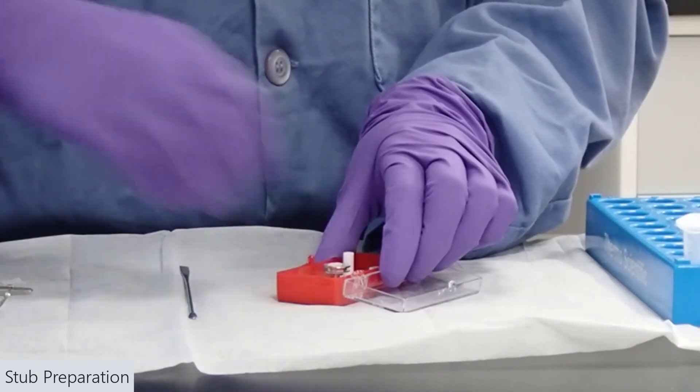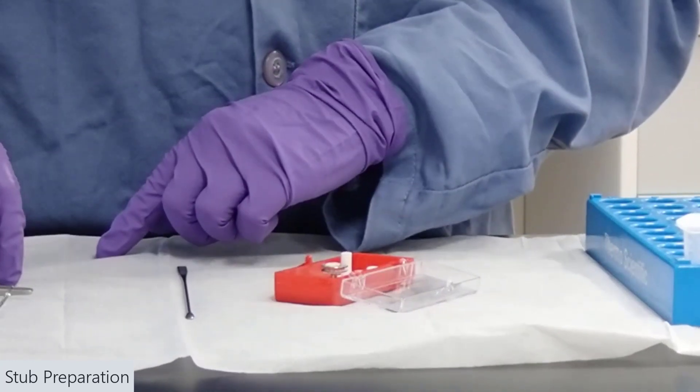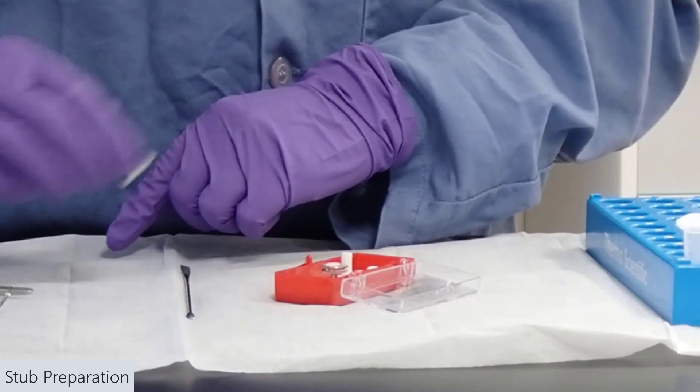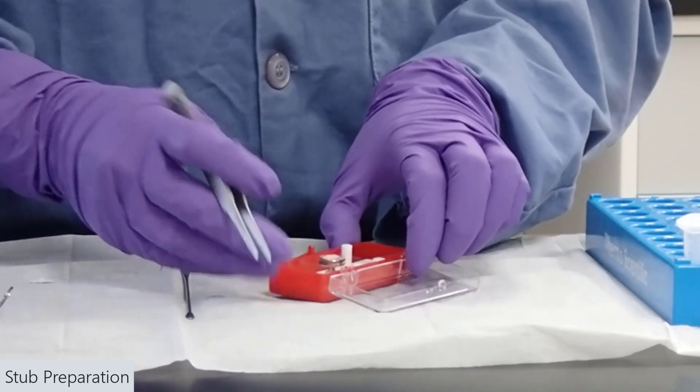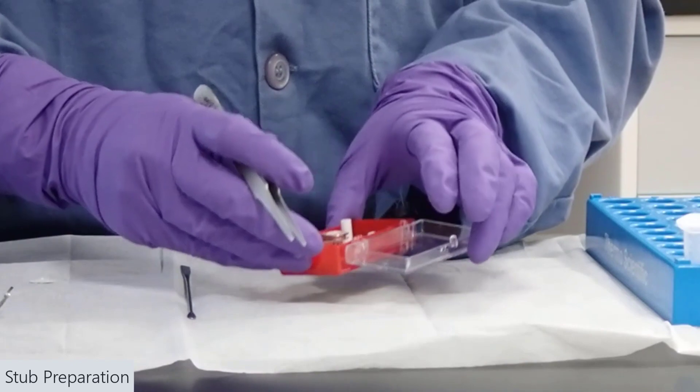So, we'll put the aluminum stub in the stub holder box, and then cut off and put down a piece of double-sided tape. I've already gone ahead and done that with copper tape in this example.